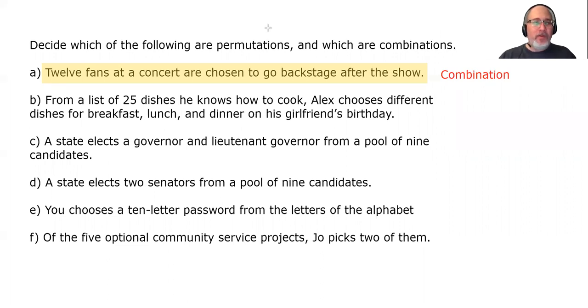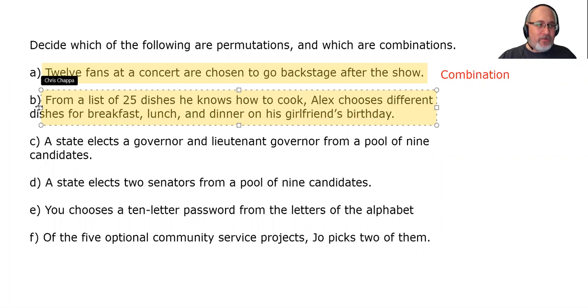From a list of 25 dishes he knows how to cook, Alex chooses different dishes for breakfast, lunch, and dinner on his girlfriend's birthday. Permutation or combination? In other words, does it matter what order he cooks the meals in? Yes, it does. Would that be the same if he had the steak and crab legs for breakfast and the eggs benedict for dinner? No, it wouldn't. In this case, the order that he chooses the meals, and specifically the order in which he prepares them, makes for a different set of meals. Since the order matters, this is a permutation.